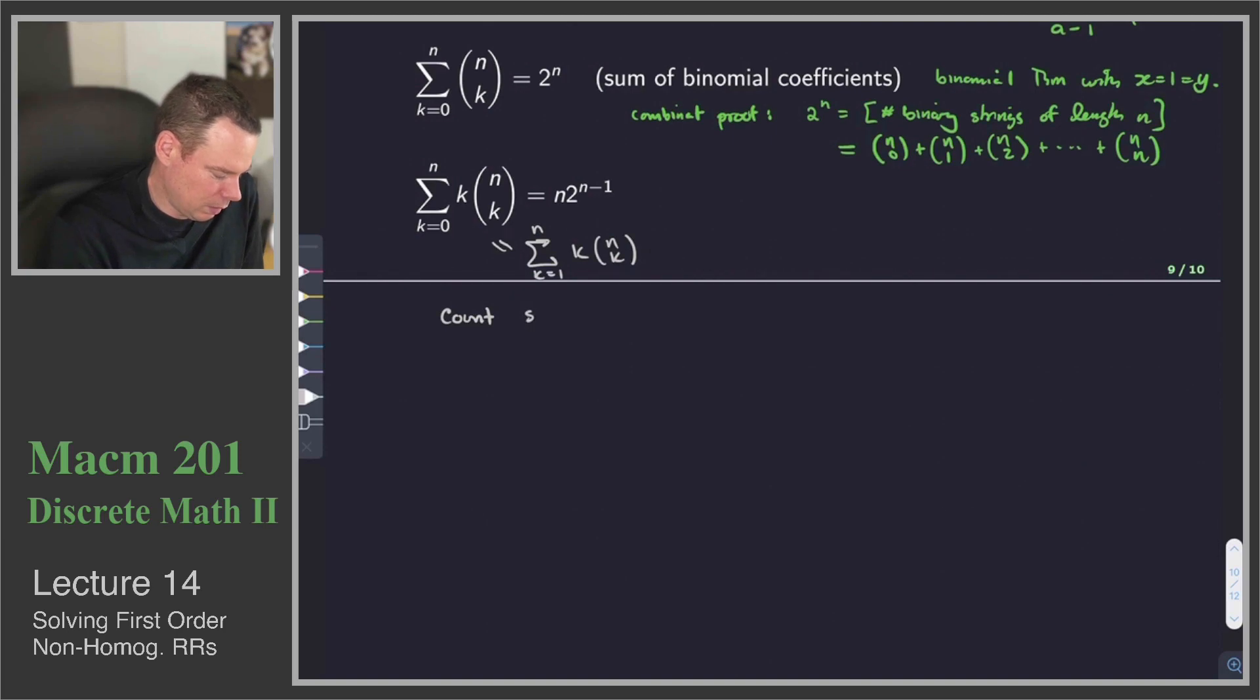So how are we going to show this? This is our combinatorial proof. We will count strings in three characters, ternary strings, using a, b, and c, or 0, 1, and 2, with exactly 1 a. I'm going to count it in two different ways.